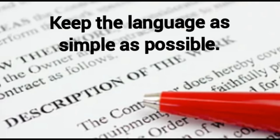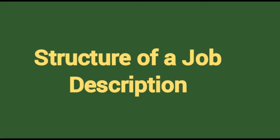As per research conducted by a job portal, job descriptions between 700 and 2,000 characters get up to 30% more applications — keep that in mind. The format and layout of any JD should be simple and accurate, clearly defining the needs of the role. However, the actual structure of the JD will typically vary between roles and organizations.